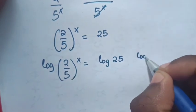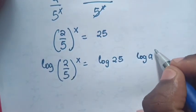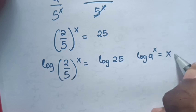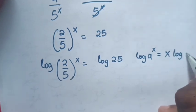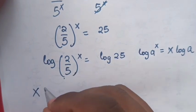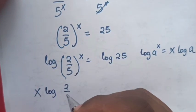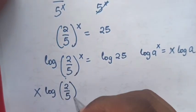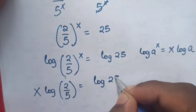Now from the formula that log a power x is equal to x log a, here it will be x log 2 over 5 is equal to log 25.